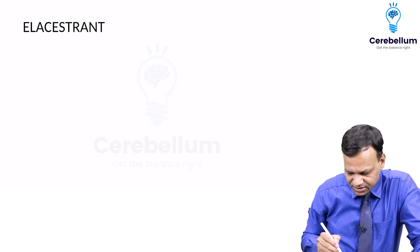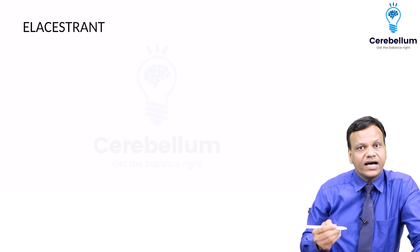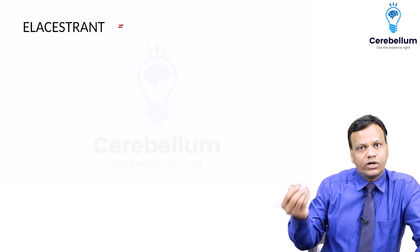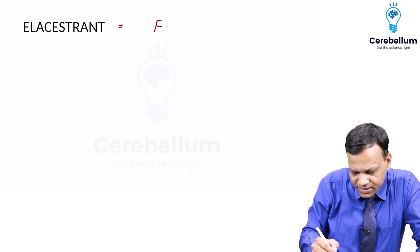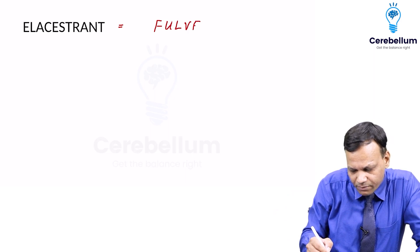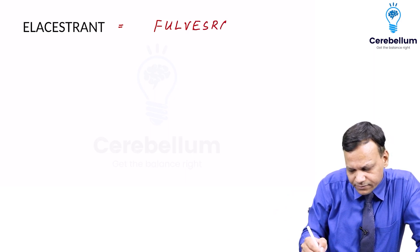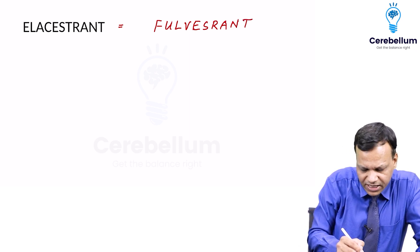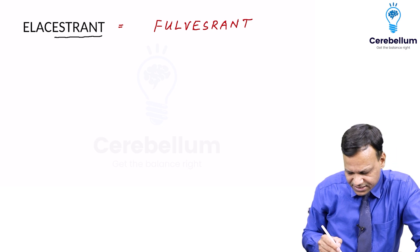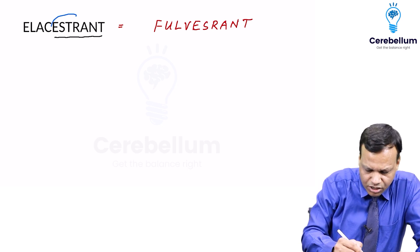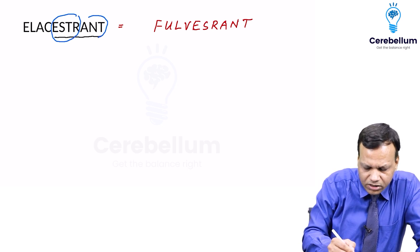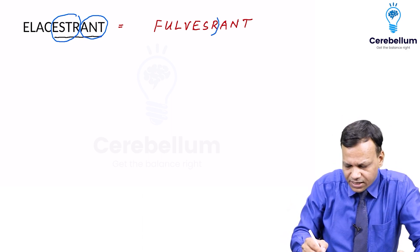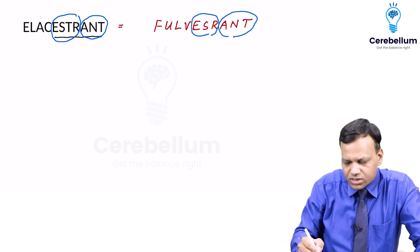The next drug is Elacestrant. Elacestrant is a sister of the older drug Fulvestrant. Like Fulvestrant, the name ends with '-estrant,' and that suffix indicates it is an estrogen antagonist — it stops the action of estrogen, just like Fulvestrant.